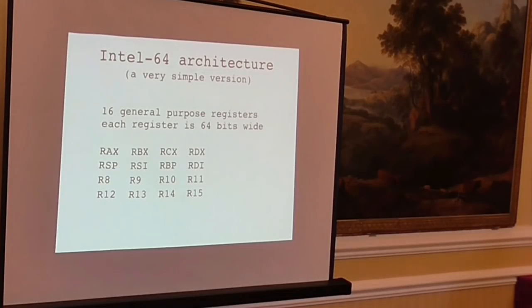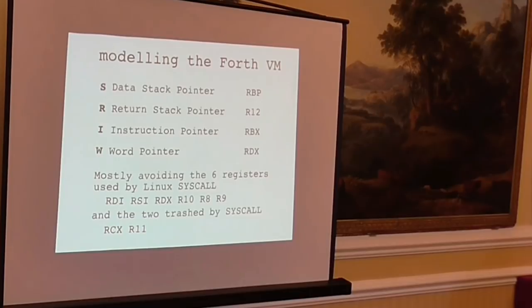I'm actually implementing this on Intel 64. A really simple description of this is we have 16 general purpose registers plus a PC. Each register is 64 bits wide. And the registers, conveniently, are called RAX, RBX, RCX, RDX, RSP, RSI, RBP, RDI, and R8 through R15. This makes it really easy to remember. And indeed, to model my Forth VM, I picked some Intel registers here on the right. So S is in RBP, R is in R12, I is in RBX, W is in RDX. And this is a mixture of me being able to remember which registers and which ones avoided the Linux SYSCALL protocol, which of course uses RDI, RSI, RDX, R10, R8, and R9.